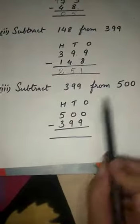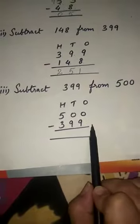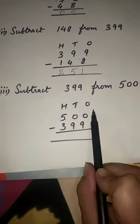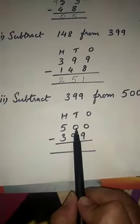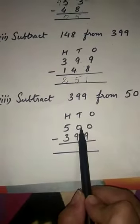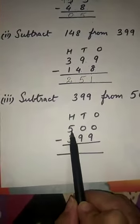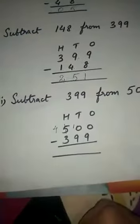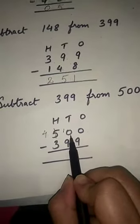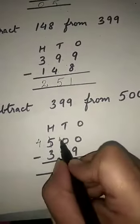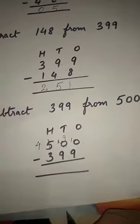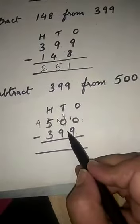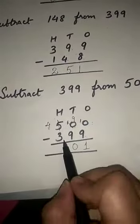Third sum: subtract 399 from 500. Here 500 is the bigger number, so we write 500 minus 399. Now 0 is smaller than 9, so you cannot subtract 9 from 0. You would borrow from the tens place, but the tens place also has 0. So that 0 will borrow from the hundreds place — 500 gives 100 to the tens place, and the hundreds digit becomes 4. Now the tens place has 10, and the ones place borrows 1 ten, making ones 10 and tens 9. So: 10 minus 9 equals 1, 9 minus 9 equals 0, and 4 minus 3 equals 1. The answer is 101.